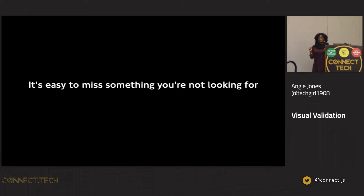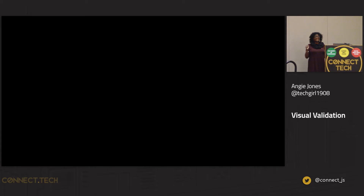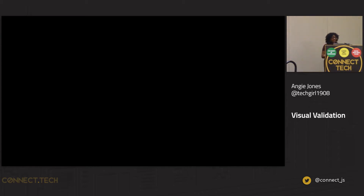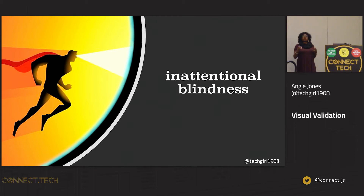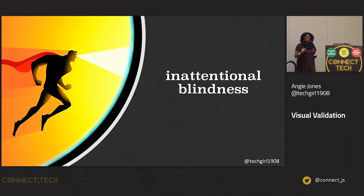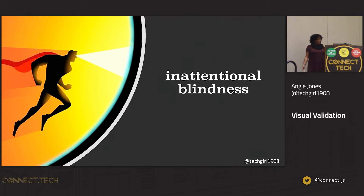Did anyone happen to notice the 21 changes? No. How about the biggest one where the dead man got up and walked away? No? We all suffer from what's called unintentional blindness — where something unexpected comes into our report, but we totally miss it because we're so focused on a specific task. This is especially relevant when we talk about testing our code.